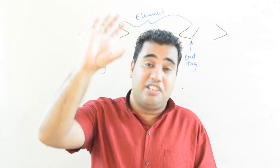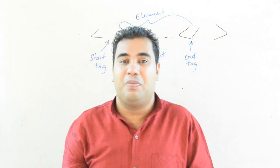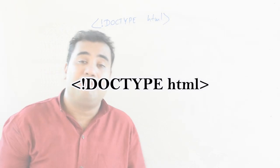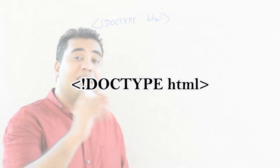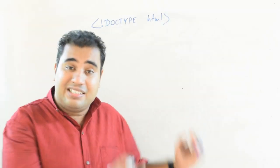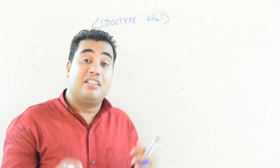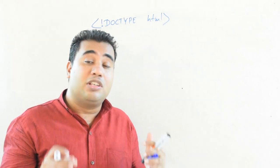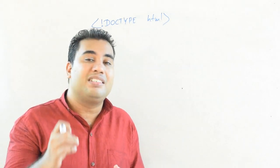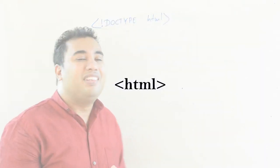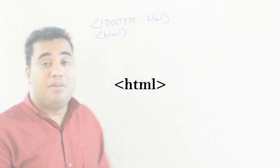When we take a web page written in HTML, within the HTML code there are also a few parts. At the top we have content about the site or page — this simply tells the browser that this is an HTML page. The main tag, or the root tag, of HTML is the HTML tag.